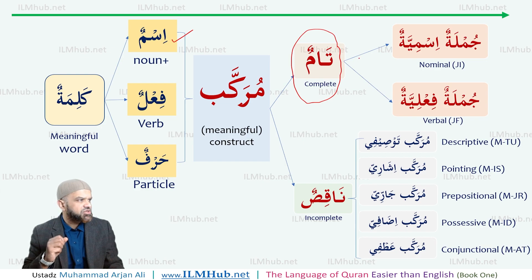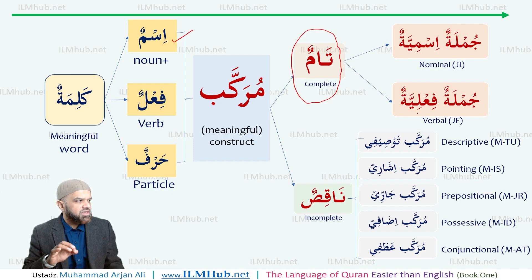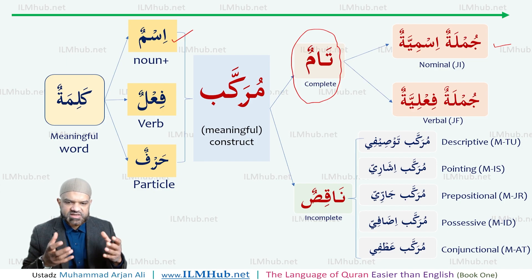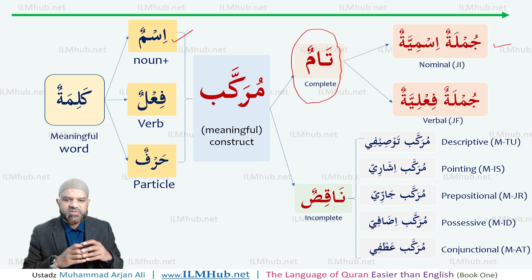A complete construct gives us a full meaning, and there are two types of sentences in Arabic. The first is called jumla ismiya, which is a nominal sentence. The other is called jumla fi'liya, which is a verbal sentence. In this lesson, let's begin by looking at the rules related to jumla ismiya. You will see the practical way we have been approaching the learning of Arabic, and each lesson we will develop our knowledge of one of the components on the map with a deeper and deeper understanding.